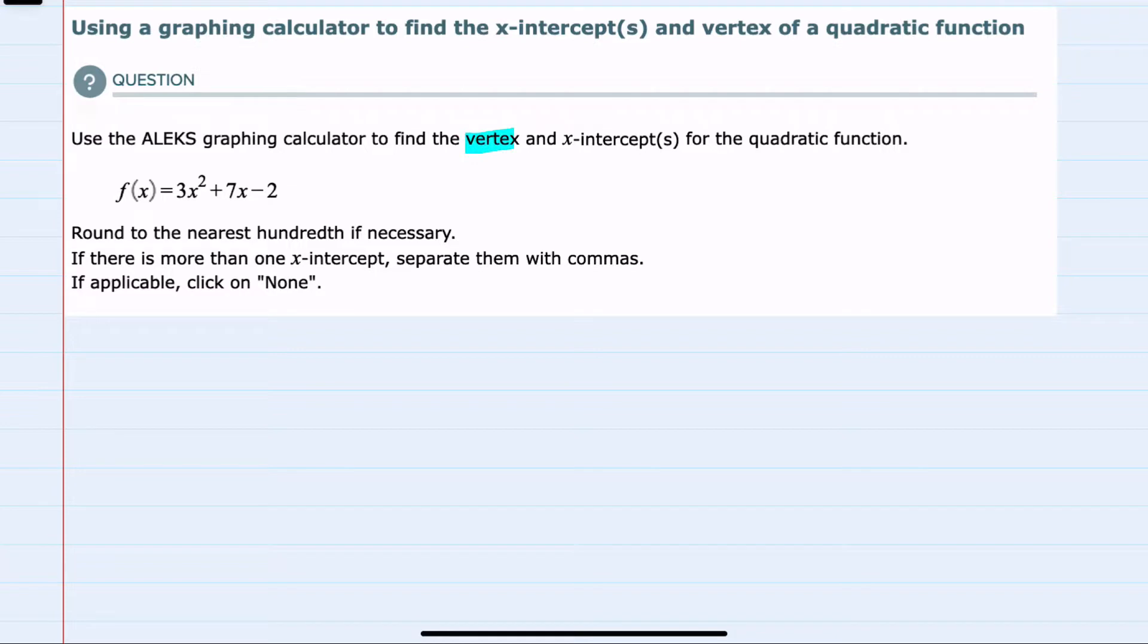So we're asked to find two things here: the vertex and the x-intercepts for the quadratic function f(x) = 3x² + 7x - 2.